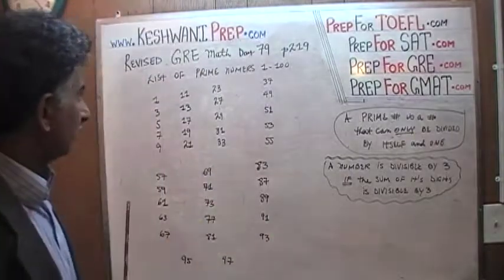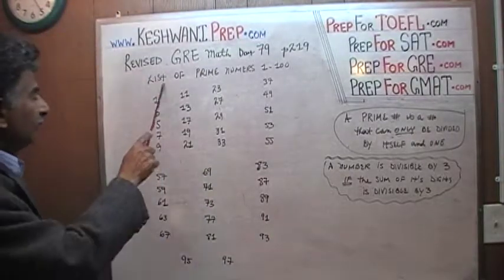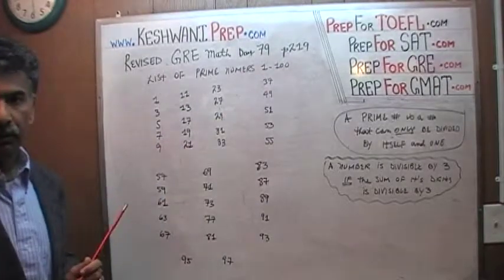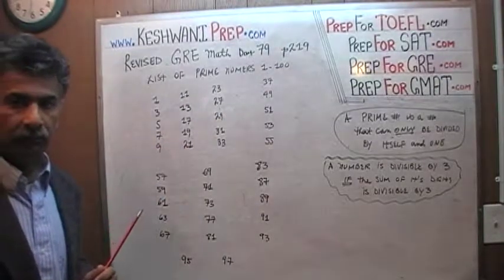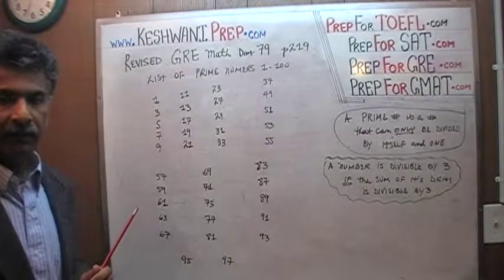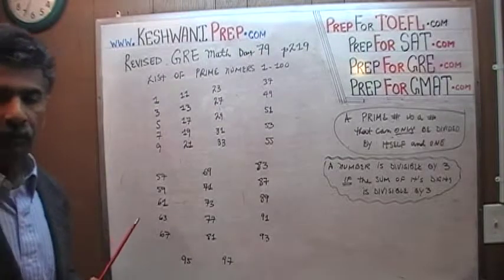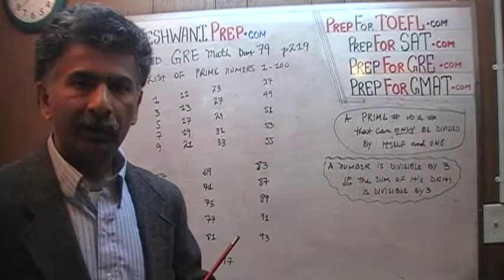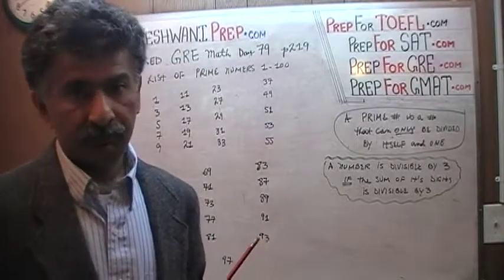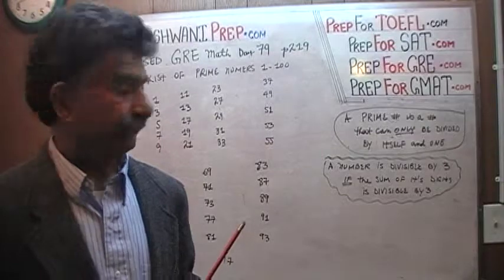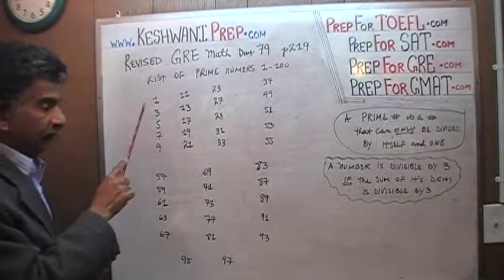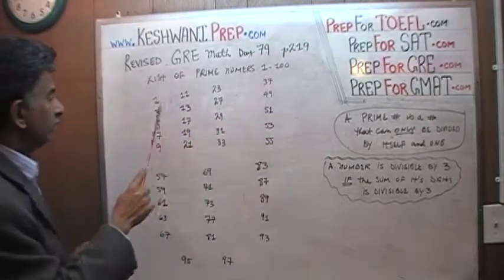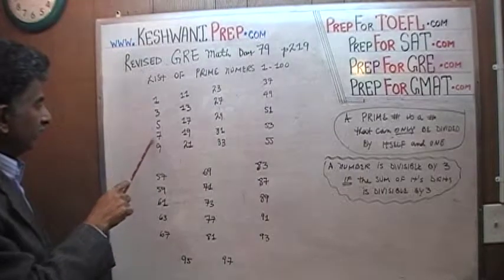On the blackboard I put together a list of prime numbers 1 through 100. I am going to go through them very quickly and then after having gone through the list I want you to pause the video and locate all the booboos. There might be one or two booboos in it. So here is the list of prime numbers from 1 through 100: 1, 3, 5, 7, 9.